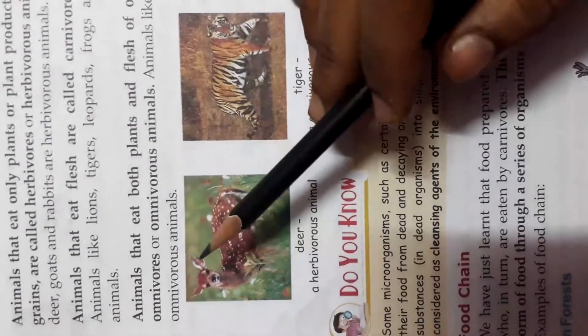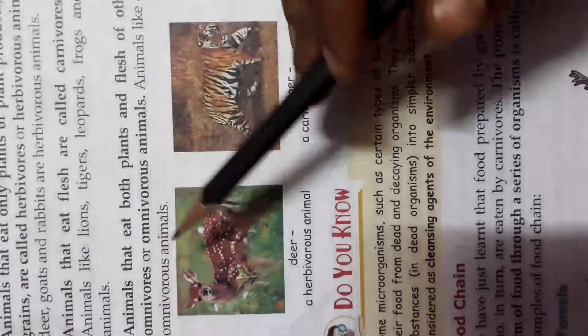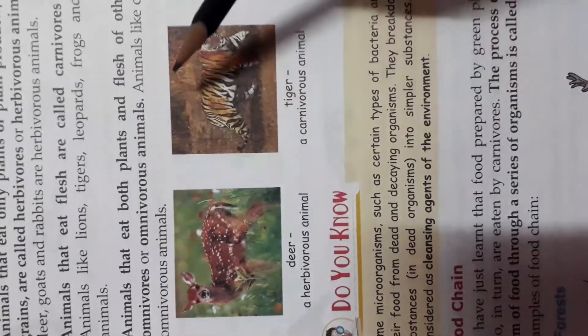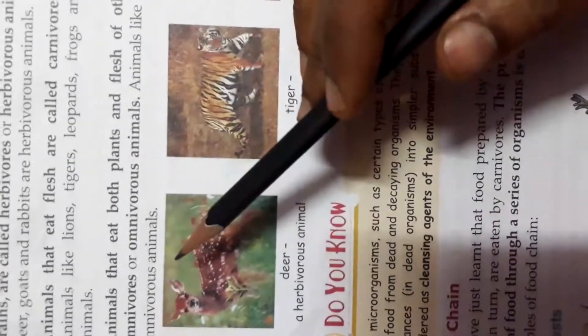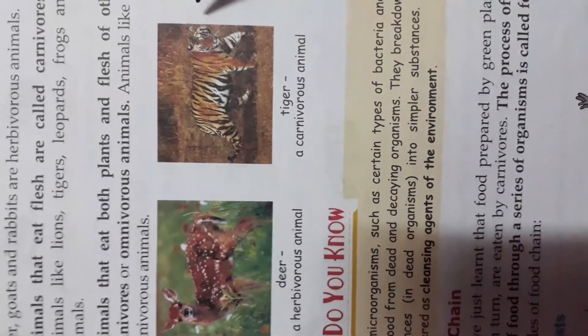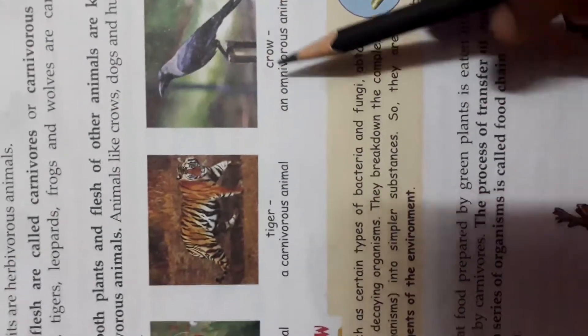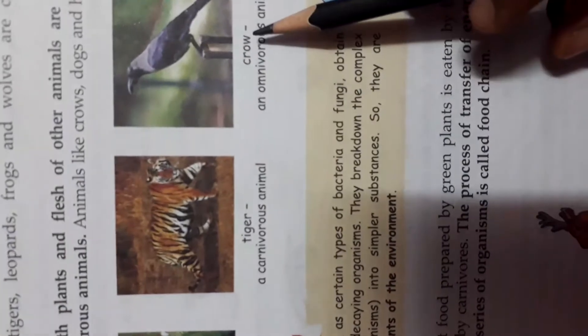The third type of animal is animals that eat both plants and flesh of other animals, known as omnivorous animals. Animals like crows, dogs, and humans are omnivorous animals. Humans are also in the omnivorous category because they eat both flesh and plants.